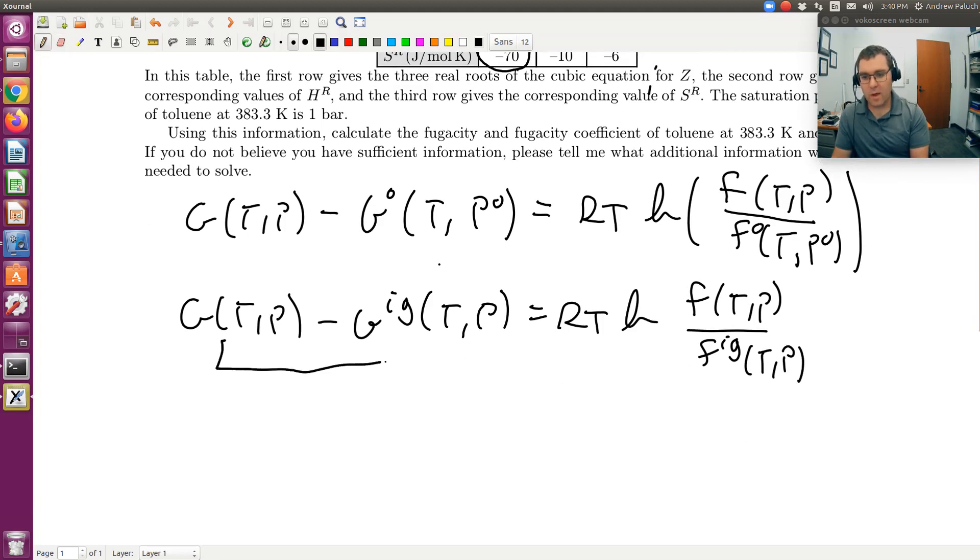In doing so, actual minus that of an ideal gas at the same conditions, that's just G residual at T and P is equal to RT log fugacity divided by the fugacity of an ideal gas. Let's take it in steps. This I could write as F at T and P. Fugacity of an ideal gas at T and P would just be P.